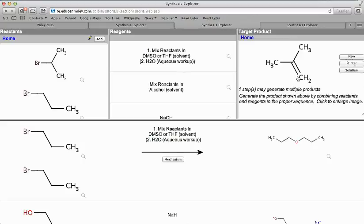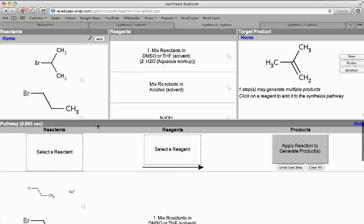Now sometimes you may right away see how you're going to get your target product. Sometimes it may take a little bit of effort. What often students should do is on paper write down how they may synthesize that, do a retrosynthesis on paper to figure out how to get that product. But sometimes you just click around and explore.